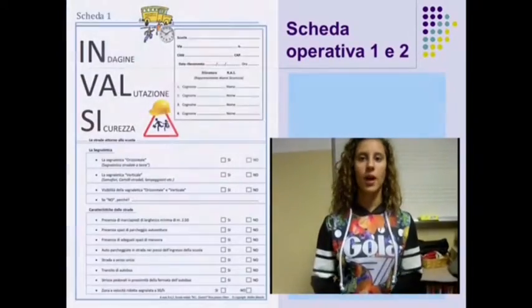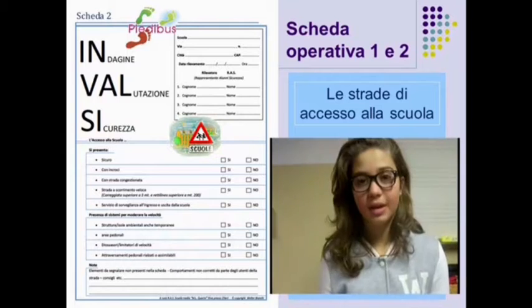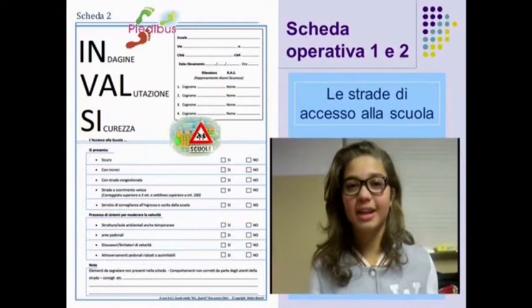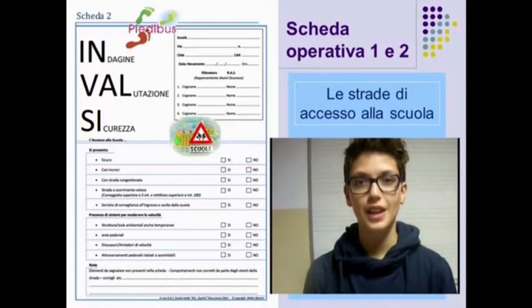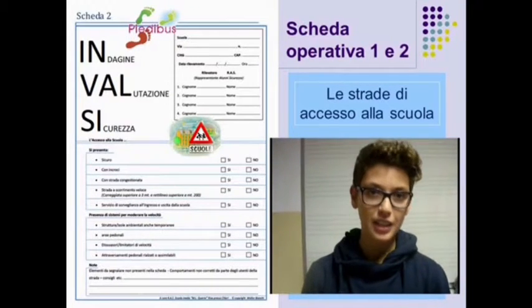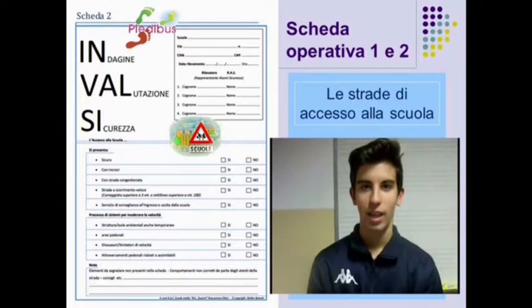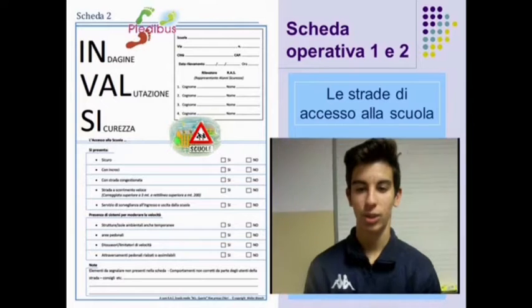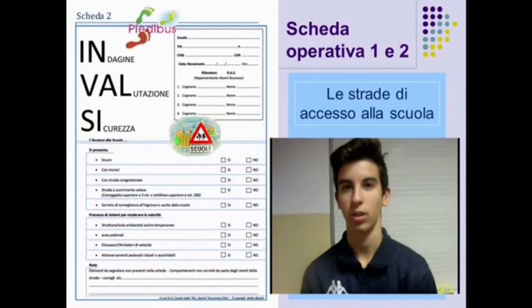Attraverso la scheda operativa 1 e 2 verifichiamo le strade di accesso alla nostra scuola, la presenza o meno della segnaletica e le caratteristiche delle strade di accesso, la presenza o meno di aree pedonali e attraversamenti pedonali protetti. Verifichiamo inoltre la presenza o meno di dissuasori di velocità e la vigilanza negli orari di entrata e uscita dalla scuola.